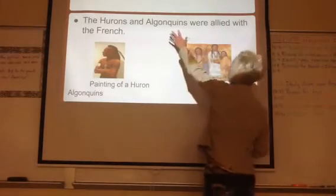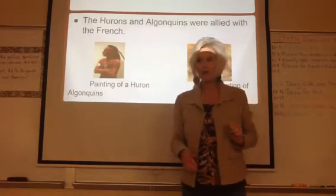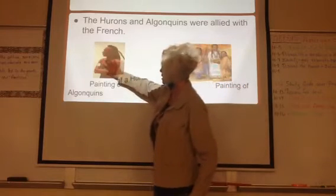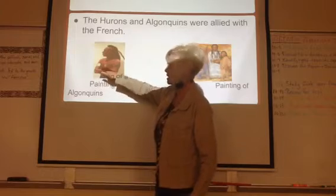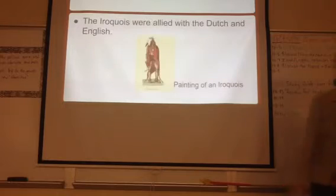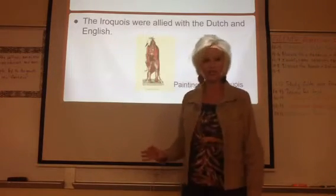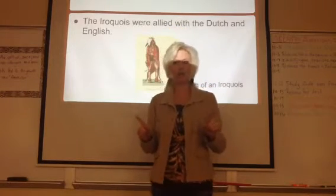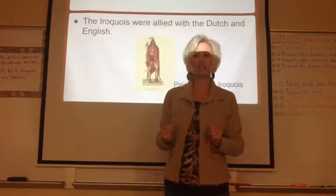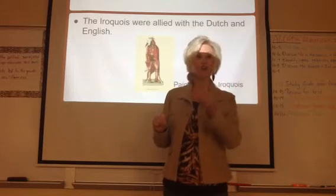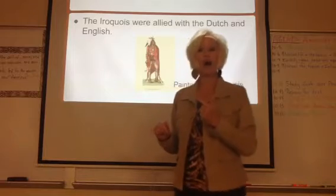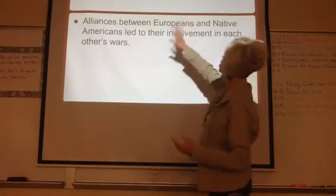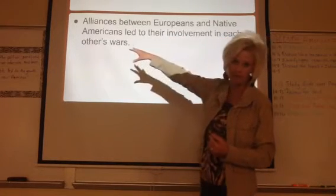The Hurons and the Algonquins are allied with the French. Have any of you watched Last of the Mohicans? It was a movie about the French and Indian War — this is actually a painting of the guy who played the villain in it. The Iroquois are going to ally with the Dutch and the English, but I want you to write something about the Iroquois: they're very careful. They're not impulsive and not going to jump into a fight just because they're friends with the Dutch and the English. They're going to sit back and watch. Alliances between the Europeans and Native Americans led to their involvement in each other's wars.